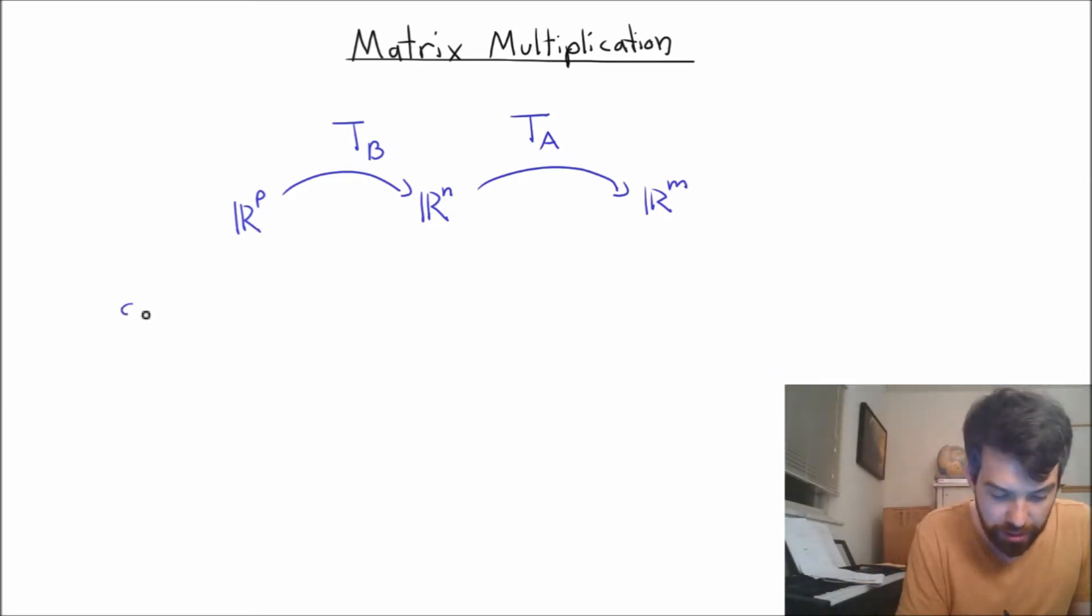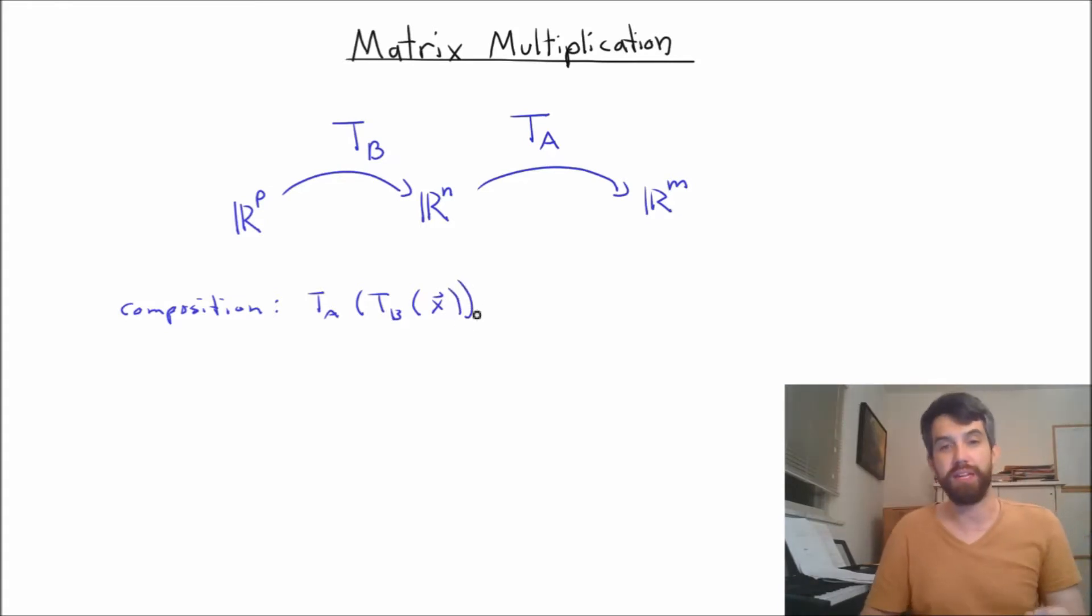So I have this composition T sub a applied to whatever T sub b was, which is applied to various vectors x, which are going to be living inside of R^p. So this is a composition, and what it does is it starts in this R^p, and that's where these vectors x live.